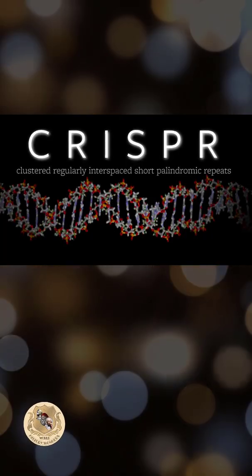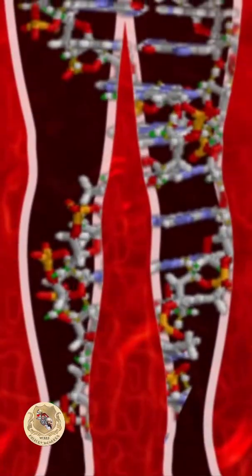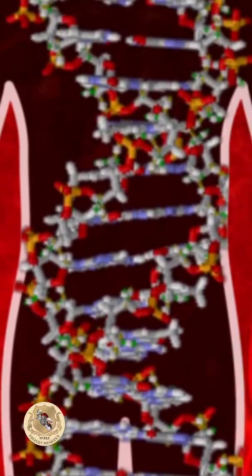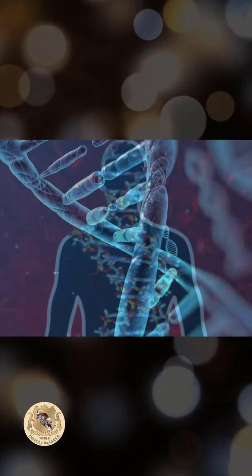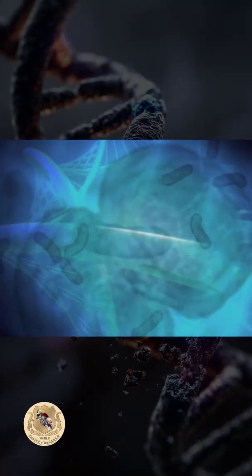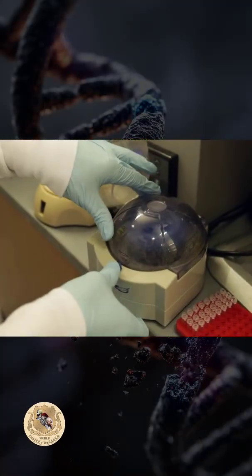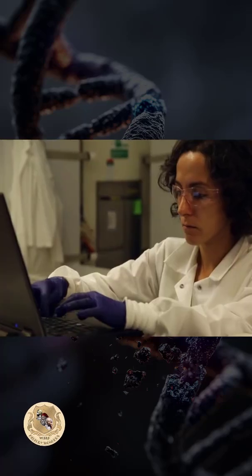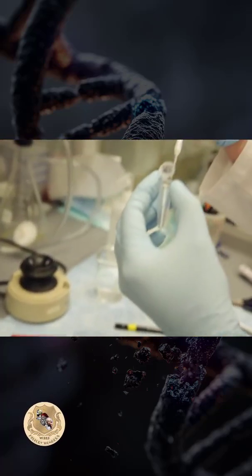CRISPR is a technology for changing the sequence of DNA in cells in a precise fashion to correct mutations that might otherwise cause disease. It's going to enable a lot of science to be done that was impossible to do in the past.